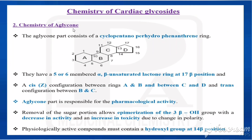Now the chemistry of aglycone. The aglycone contains a steroid nucleus, which is cyclopentano-perhydrophenanthrene. It also has a lactone — either a cardenolide (5-membered) or bufodienolide (6-membered) — at the 17th position. This is an alpha-beta unsaturated lactone in 17 beta configuration.